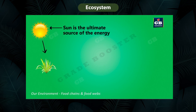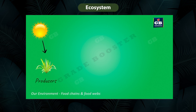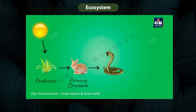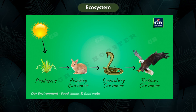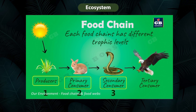In any food chain, the sun is the ultimate source of energy. Plants convert solar energy into chemical energy — that is, food — which is why plants are called producers. Animals that feed on plants are called primary consumers, those that feed on primary consumers are called secondary consumers, and those that feed on secondary consumers are called tertiary consumers. Producers are at the first trophic level, primary consumers at the second, secondary consumers at the third, and tertiary consumers at the fourth.